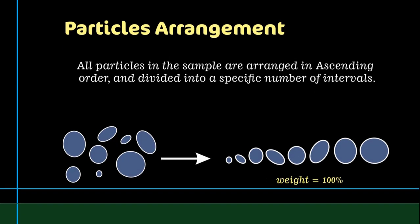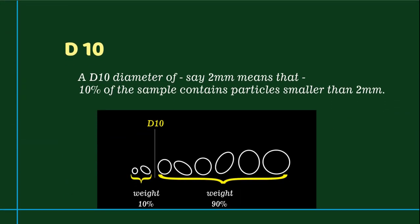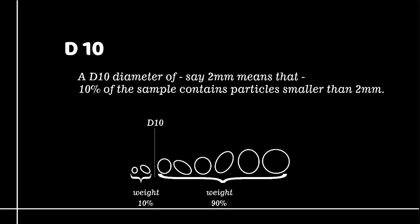If, for instance, a D10 diameter of say 2mm is selected, this will imply that 10% of that sample actually contains particles which are smaller than 2mm.